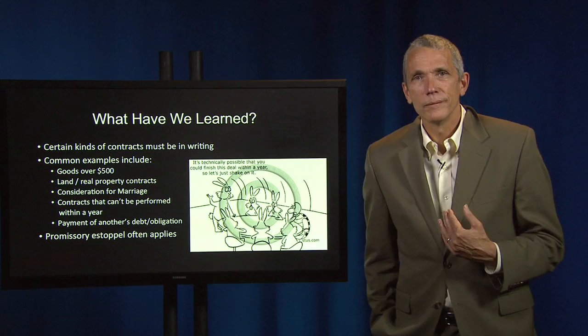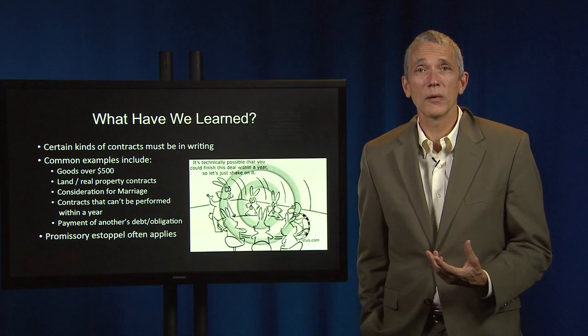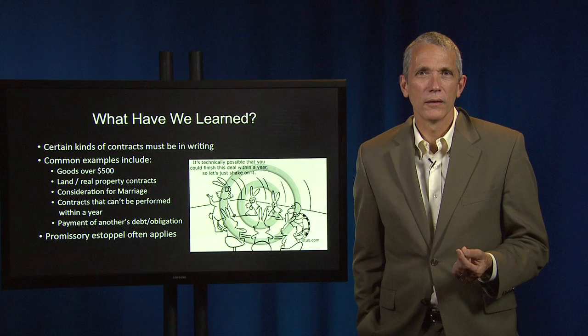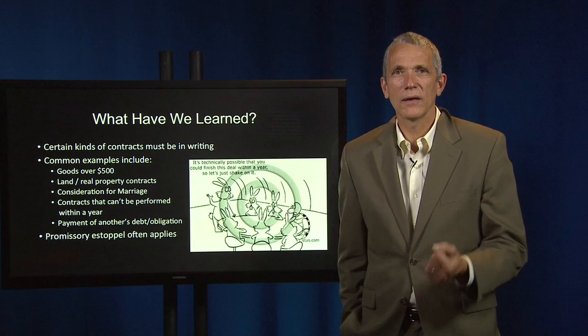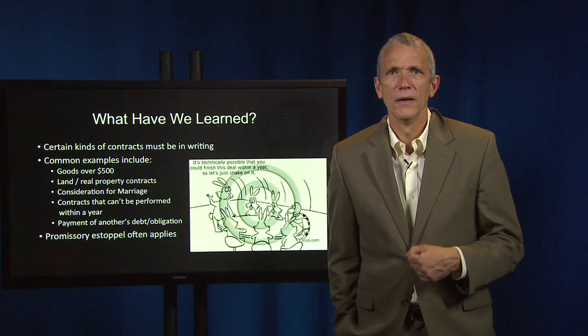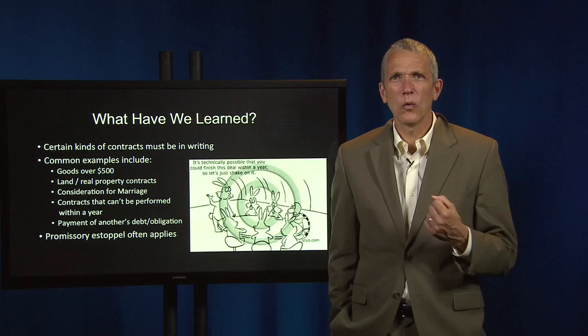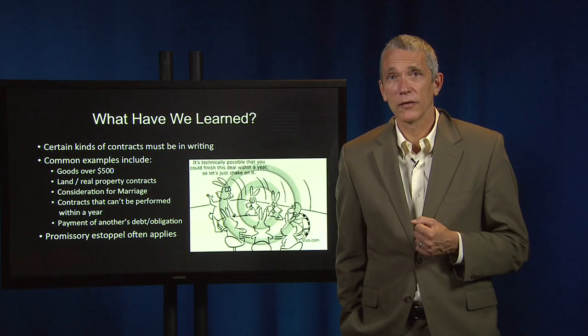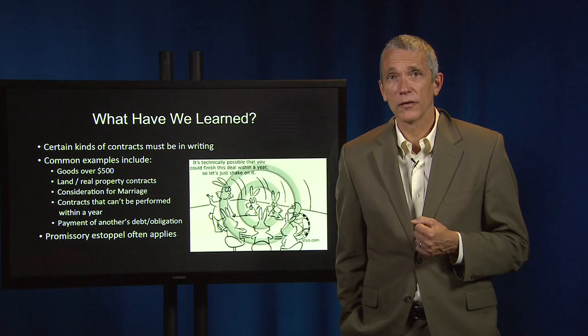So, what have we learned? We've learned that certain kinds of contracts must be in writing in order to be enforceable, and that this requirement has deep historic origins. We're familiar with the basic types of contracts that fall within the ambit of the statute of frauds: contracts to buy and sell goods over $500, contracts to buy or sell real property, contracts that cannot be performed within one year, contracts offering something in return for a marriage promise, and agreements to pay another person's debt. But we've also learned that parties often can pursue promissory estoppel theories just as if the agreement in question weren't one to which the statute of frauds applied.